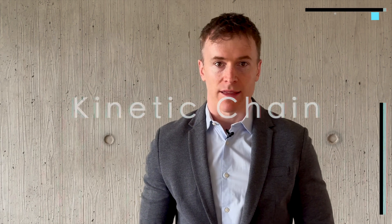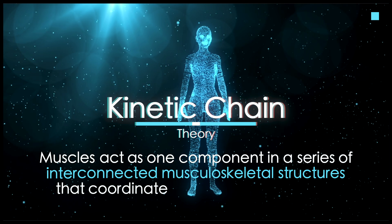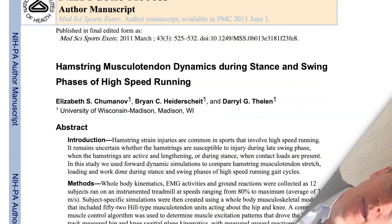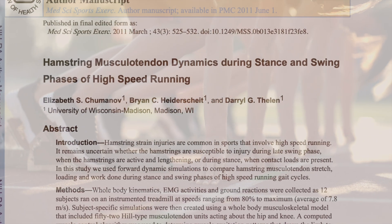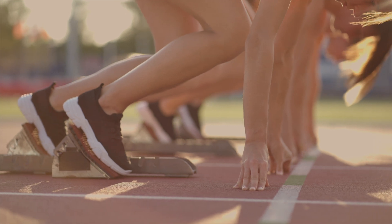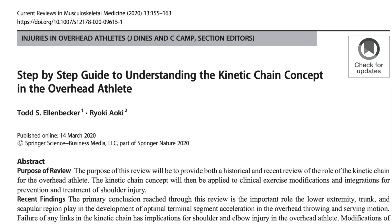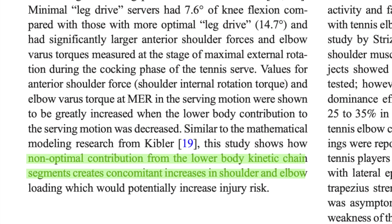All of this feeds into the kinetic chain theory, whereby muscles act as one component in a series of interconnected musculoskeletal structures that coordinate and control movement. This theory posits that any weakness or tightness in any part of the kinetic chain increases the strain placed on other components, which must compensate, thereby increasing their risk of injury. Some research has shown that an injury in a certain muscle or muscle group can alter an athlete's biomechanics and place increased stress on other muscles elsewhere in that kinetic chain. Some observational studies have found that the risk of subsequent muscle injury is increased in individuals with a history of certain joint or muscle injuries elsewhere in the kinetic chain.